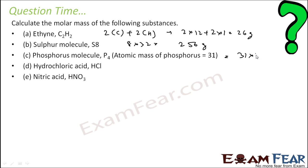Phosphorus P4, each phosphorus is 31, 31 into 4, 124 grams. HCl, 1 hydrogen is 1, 1 chlorine is 35.5. You add them, you get 36.5 grams. Nitric acid, 1 hydrogen, 1 nitrogen 14, 3 oxygen 3 into 16. If you solve it, you get 63 grams.